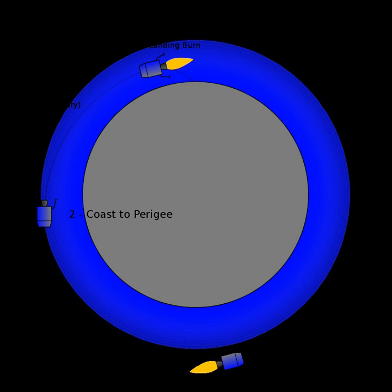For a planet with an atmosphere, the coast portion of the trip includes reentry through the atmosphere as well. After the coast and possible reentry, the vehicle jettisons any no-longer-necessary heat shields and/or parachutes in preparation for the final landing burn. If the atmosphere is thick enough, it can slow the vehicle considerably, saving on fuel. In this case a gravity turn is not the optimal entry trajectory, but it does allow for approximation of the true delta-v required. Where there is no atmosphere, the landing vehicle must provide the full delta-v necessary to land safely on the surface.